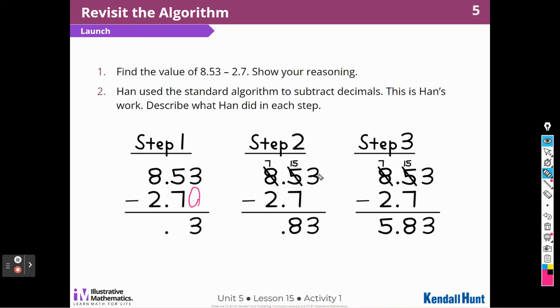And then in step 2, he notices that he cannot take 7 from 5, so he borrowed 1 from the 8, made that a 7, and made the 5 a 15. So, 15 minus 7 is 8. That's what he did in step 2. In step 3, he took his 7 and subtracted the 2 and got 5, 5 and 83 hundredths.